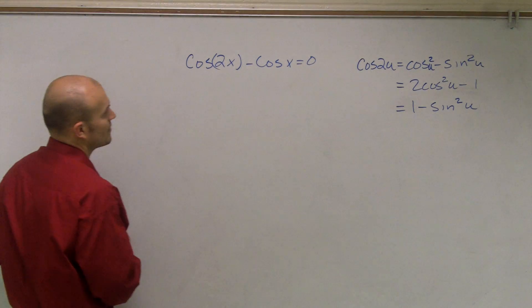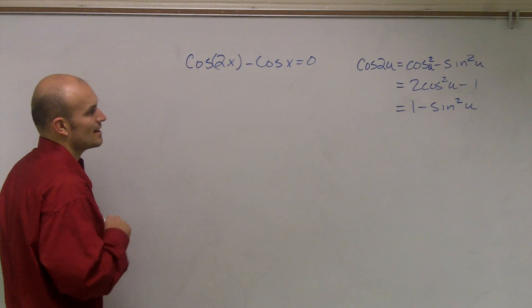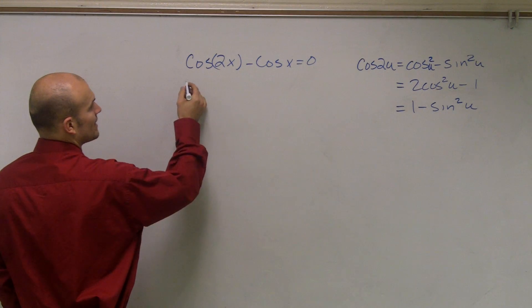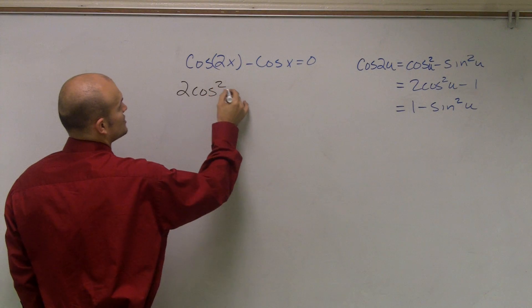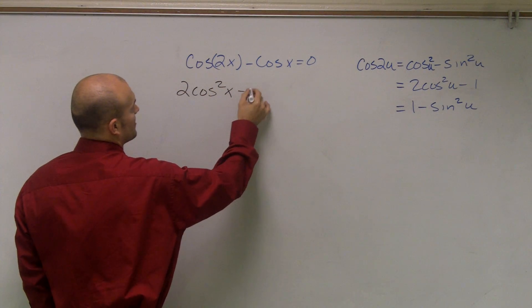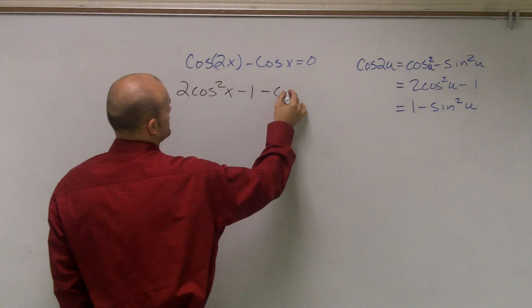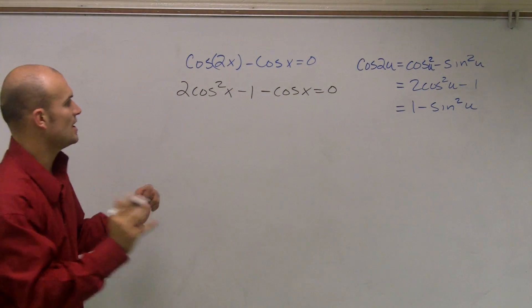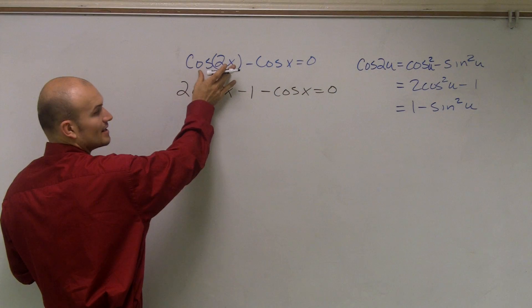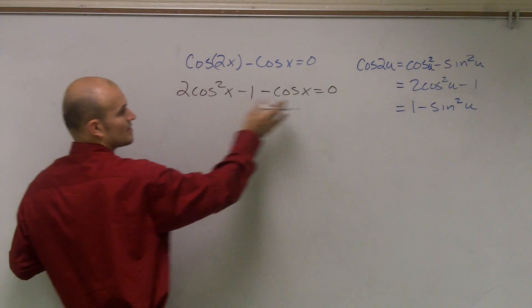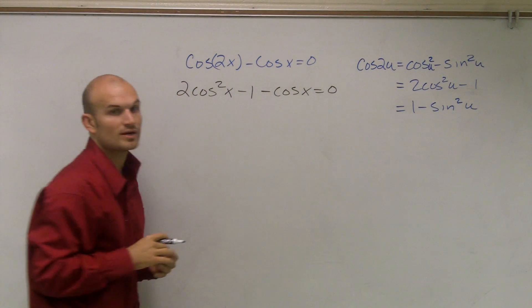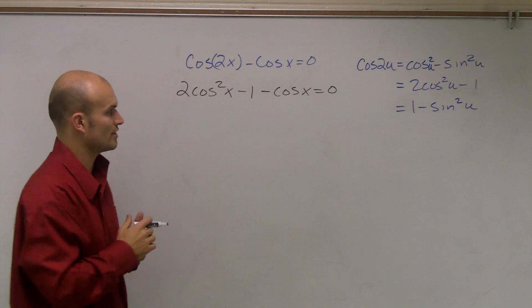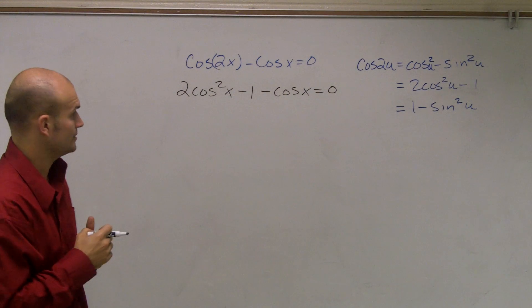So what I'm going to do is rather than rewrite cosine of 2x, what I'm simply going to do is I'm going to now rewrite that as 2 cosine squared of x minus 1 minus cosine of x equals 0. So all I've done is I've replaced the cosine, the double angle cosine, with the formula 2 cosine squared of x minus 1. And again, the x and the u, those are just your variable for your angle or your unknown angle.